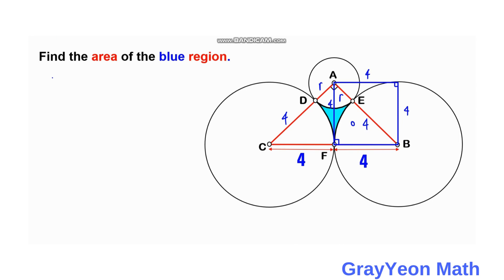We see that triangle ABF is an isosceles right triangle. In an isosceles right triangle, if you recall, the side multiplied by square root of 2 equals the hypotenuse. So 4√2 is equal to the hypotenuse, which is r + 4. This gives us r = 4√2 - 4.